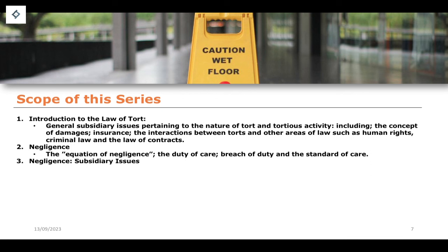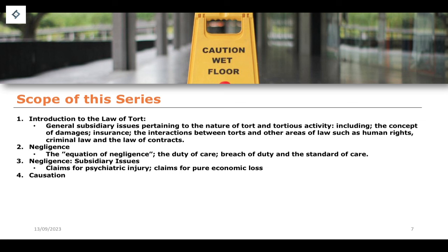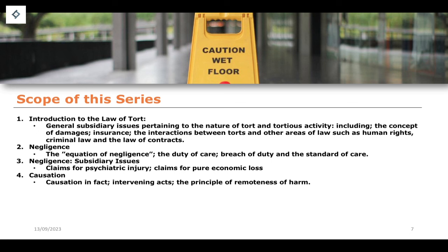We'll also look at subsidiary issues within negligence, most importantly claims for psychiatric injury — including the distinction between primary and secondary victimhood — as well as claims for pure economic loss, relational economic loss, and consequential economic loss. We will then look at the final part of the negligence equation: causation. We'll discuss factual causation, intervening causes and intervening acts within tortious cases, and the principle of remoteness of harm, all of which is very important across many areas of tortious activity.